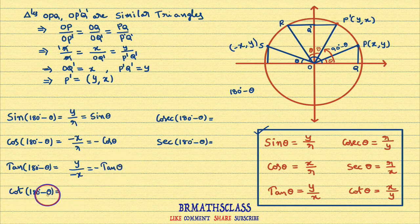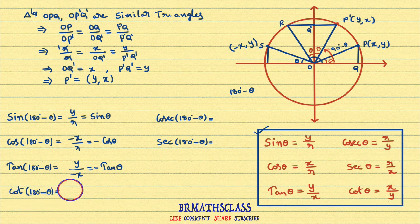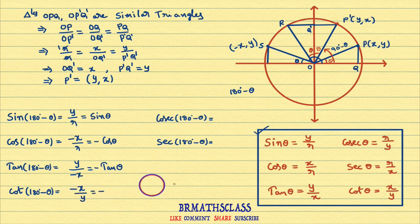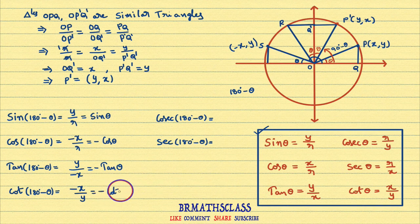Now we will see cot(180 degrees minus theta). Cot theta is defined as x coordinate of the point divided by y coordinate of the point. Cot(180 degrees minus theta) means x coordinate of S, which is minus x, divided by y coordinate of S, which is y. That equals minus x by y. Since x by y is cot theta, cot(180 degrees minus theta) equals minus cot theta.